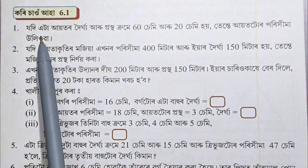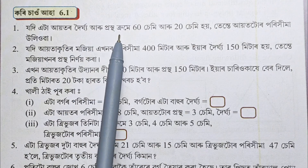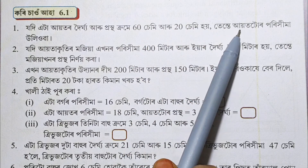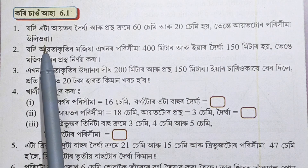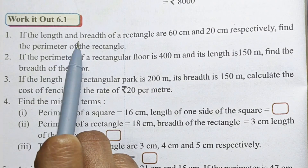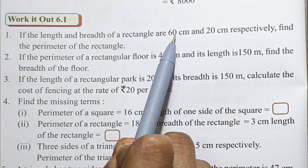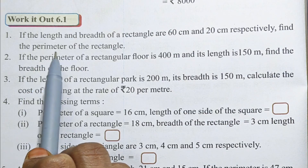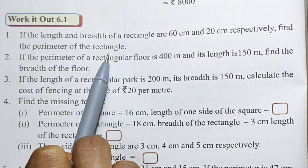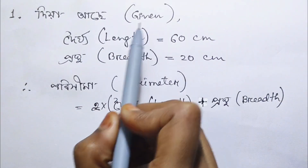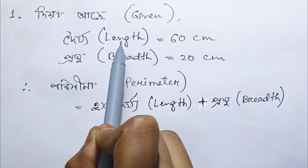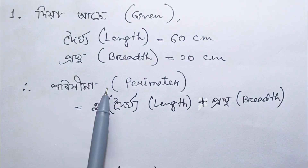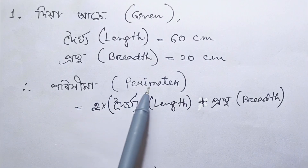Question number 1: the length and breadth of a rectangle are 60cm and 20cm respectively. Find the perimeter of the rectangle. Given: length = 60cm, breadth = 20cm.